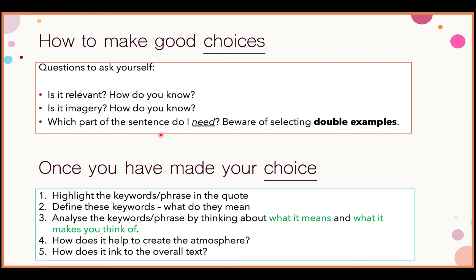Questions to ask yourself as you go through the paragraph: Is it relevant to the question? Think about what your focus is in the question and whether this choice is relevant to that focus. Is it imagery — does it create an image for you? Is it unusual? Does the writer use words you would not normally associate with that particular thing?